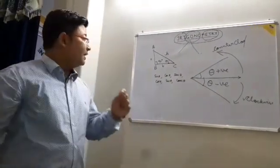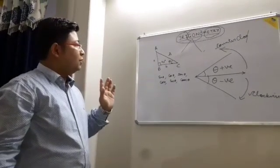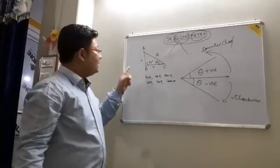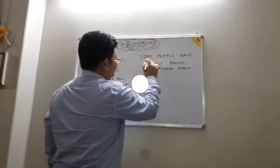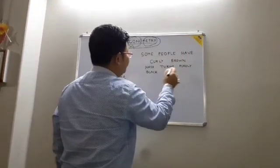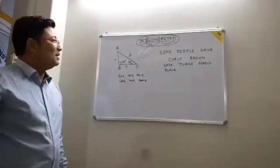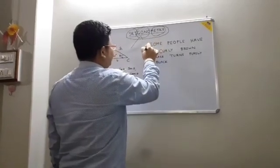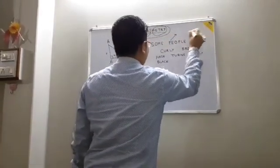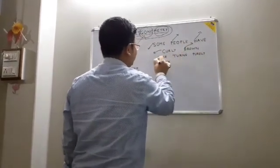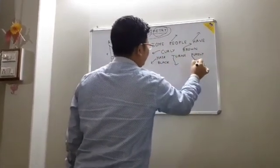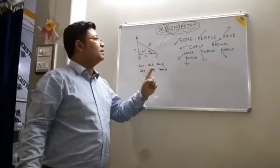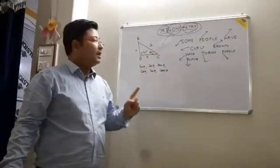I will give you a simple technique to remember all those formulas — one sentence we have to remember: 'Some people have curly brown hair turns purely blank.' You will laugh at this, but it will help you understand all these things. Let us take the first letter of each word.